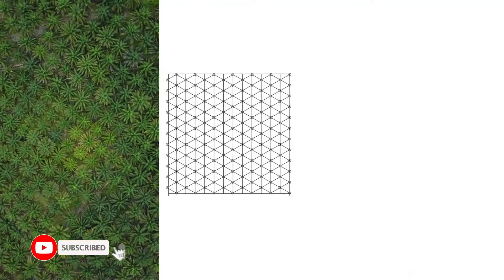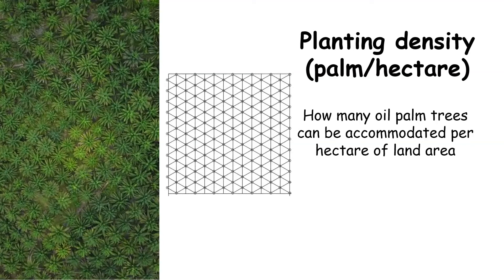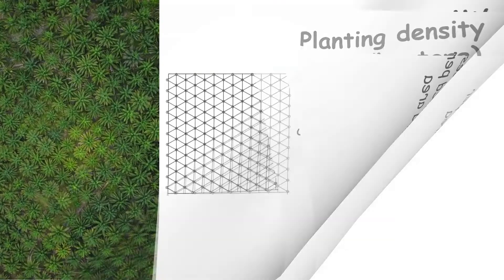Oil palm is commonly planted in an equilateral triangle pattern with a certain distance between all palm trees. Planting density is usually expressed in palms per hectare, referring to how many oil palm trees can be accommodated per hectare of land area.